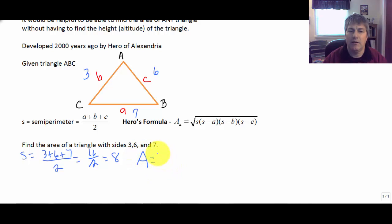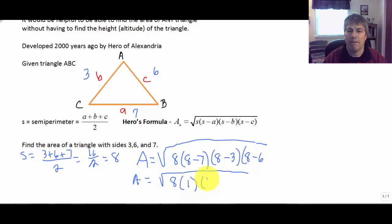Substituting that into Hero's Formula, our area is equal to the square root of 8 times 8 minus the length of side A or 7 times 8 minus the length of side B which is 3 times 8 minus the length of side C which is 6. So our area equals the square root of 8 times 1 times 5 times 2.